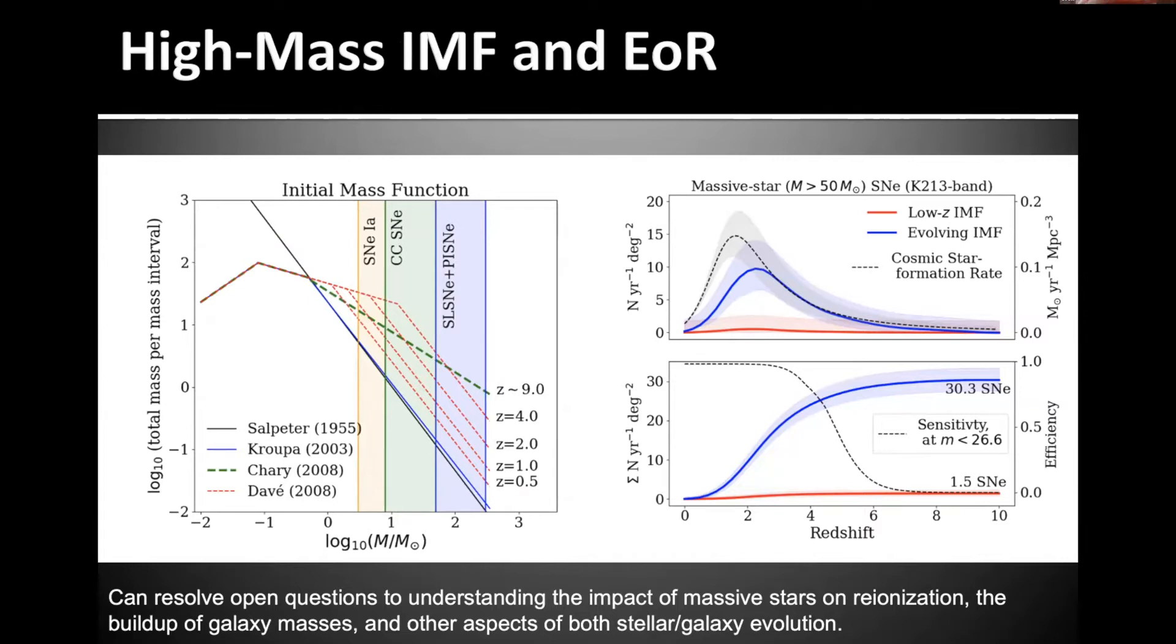There is a lot of other exciting science that really is driving such a proposal. We've talked a little bit about the high mass initial mass function, IMF, and transients during the epoch of reionization. What are the sources of the epoch of reionization? You can see on the left an evolving IMF, based off of theory, what the IMF might look like, changing as a function of redshift, becoming more and more top-heavy. To really probe that end of the IMF, you need to look for the explosions of some of the most massive stars.